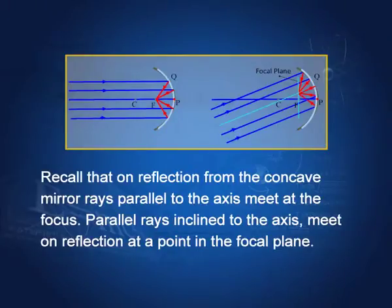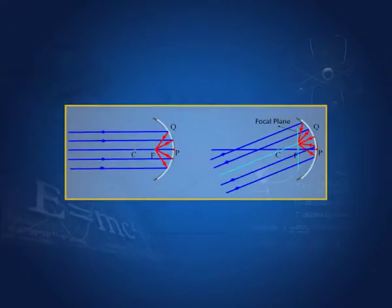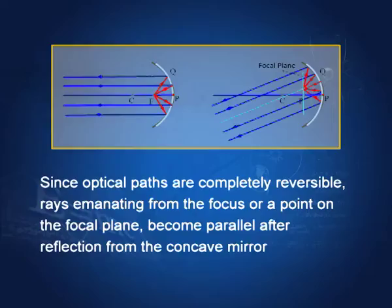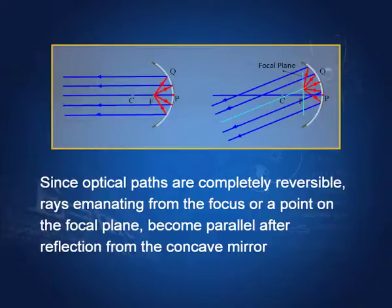Recall that on reflection from a concave mirror, rays parallel to the axis meet at the focus, and parallel rays inclined to the axis meet at a point in the focal plane. Since optical paths are completely reversible, rays emanating from the focus become parallel after reflection. Similarly, rays coming from a point in the focal plane become parallel after reflection.